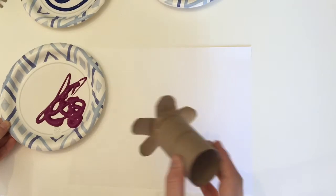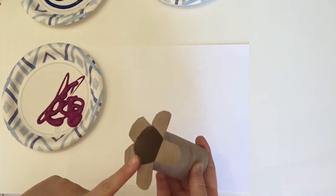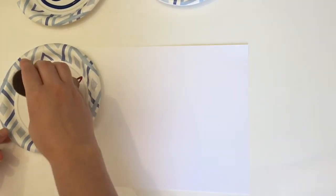Now get your paint on your plate and then you're going to stamp your petals, the bottom of your petals, into the paint.